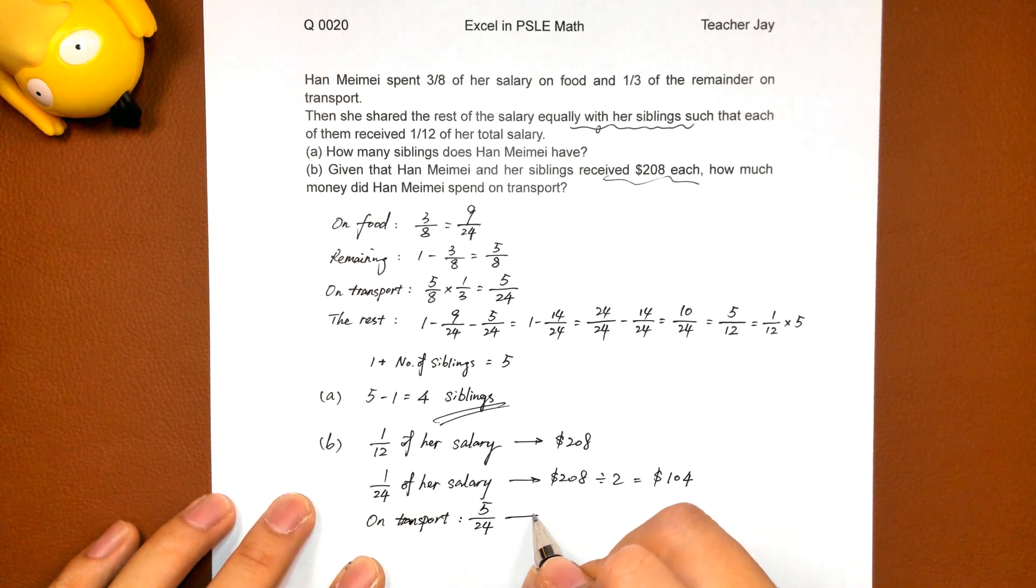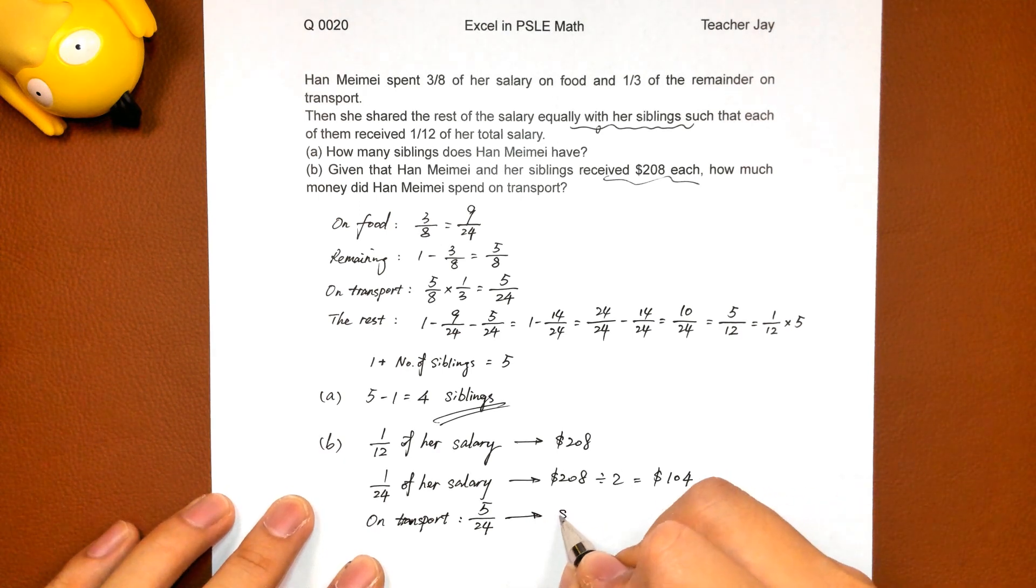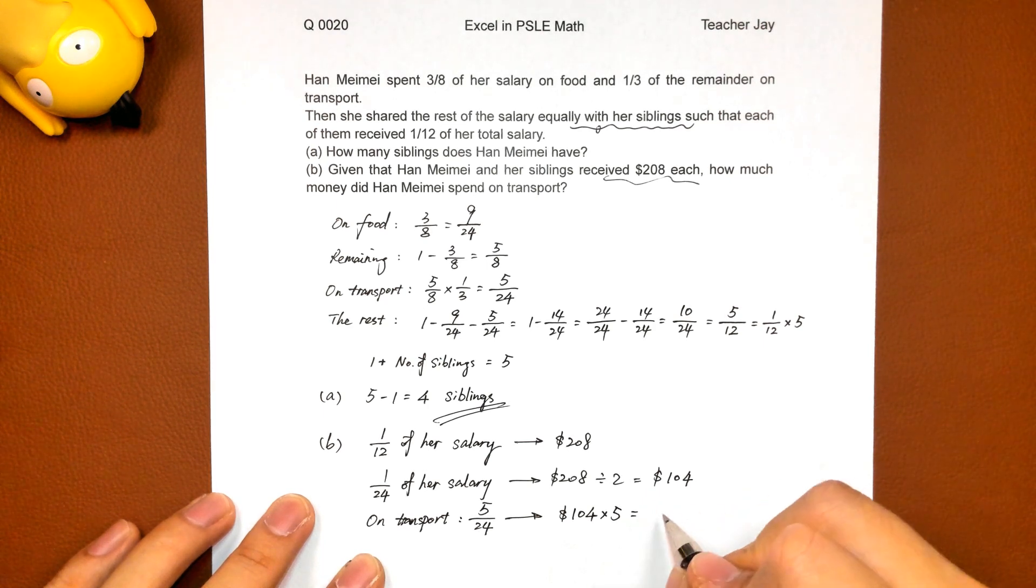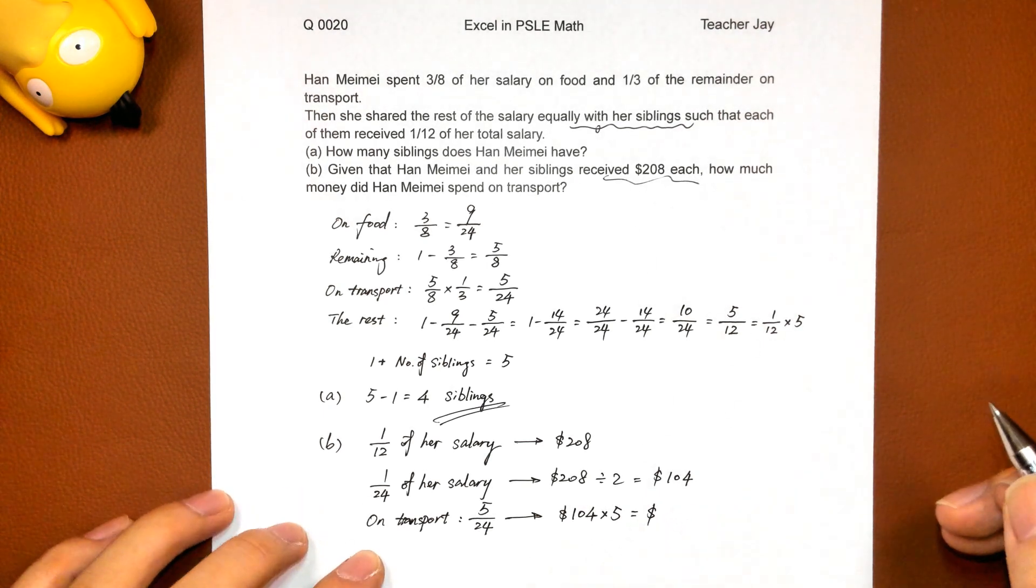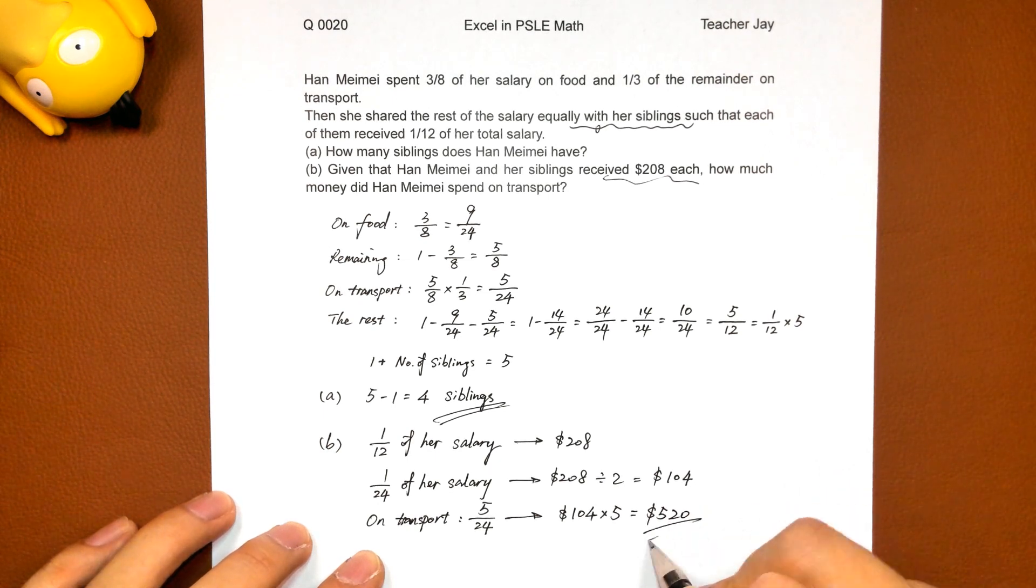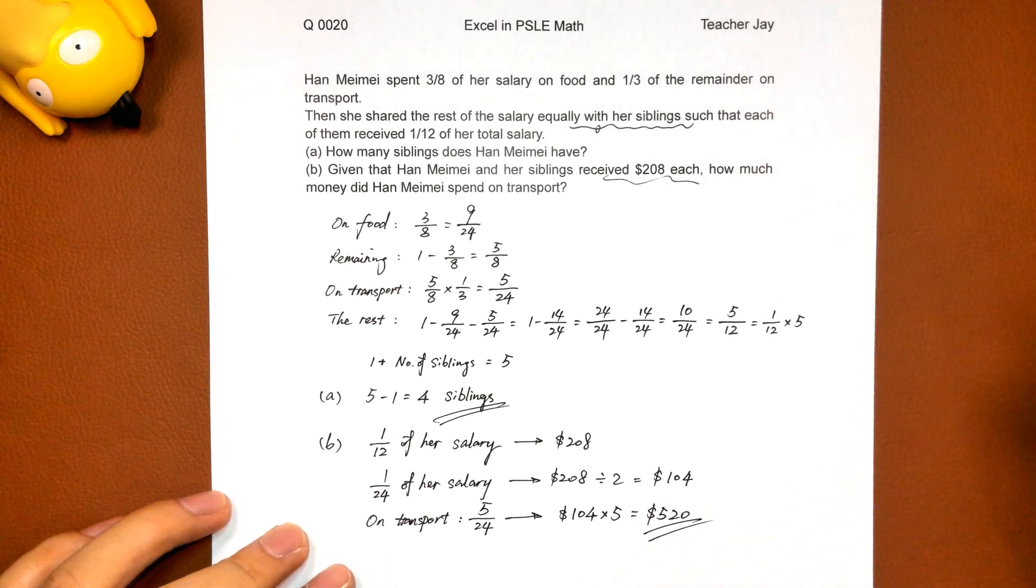Five over twenty four. One zero four times five. The amount of money spend on transport is five hundred and twenty dollars. Okay.